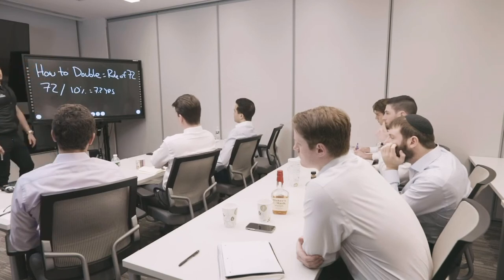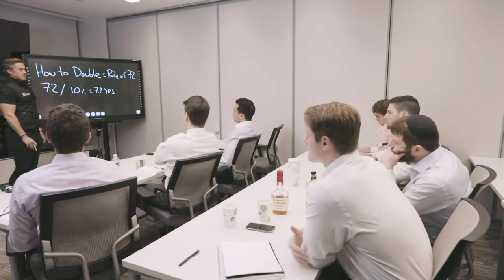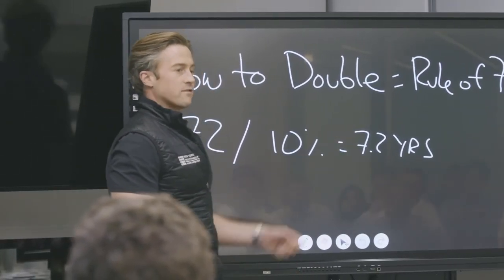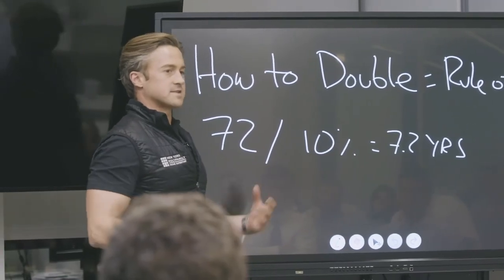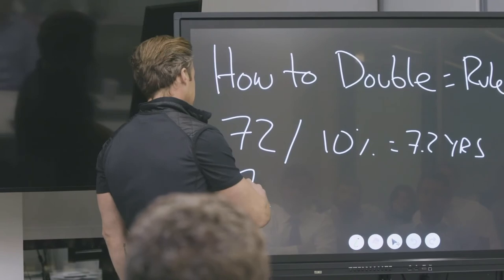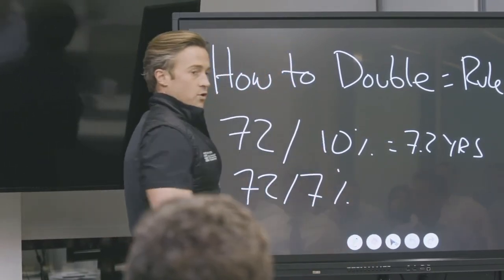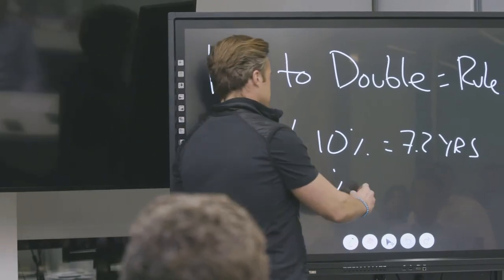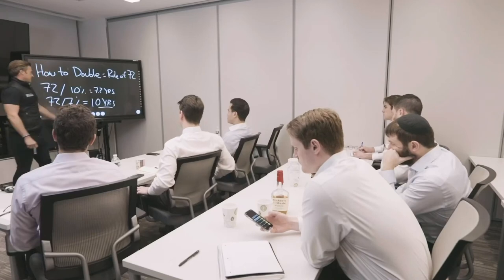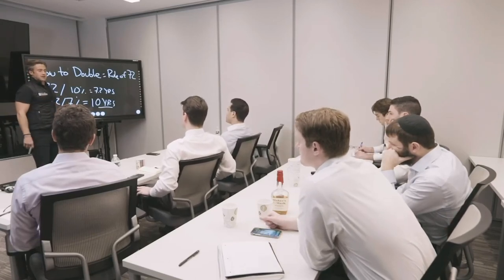How many people would be happy if every 7.2 years their money doubled? Yeah, me too. But I don't think you're taking the action necessarily that you're as motivated. 72 divided by let's say you get a 7% annual over a course of 10 years—72 divided by 7% is 10 years. Do you think we can find deals that make on average 7% return?